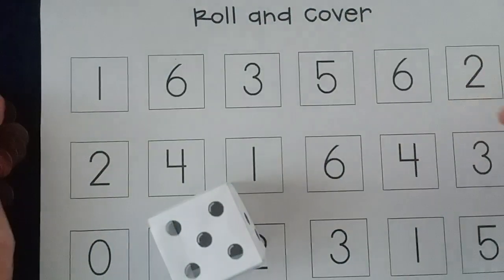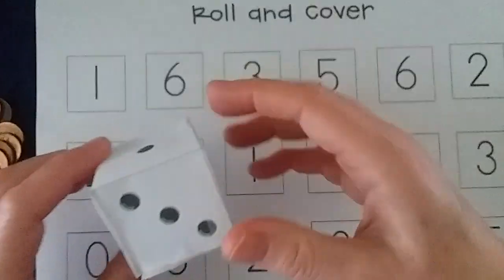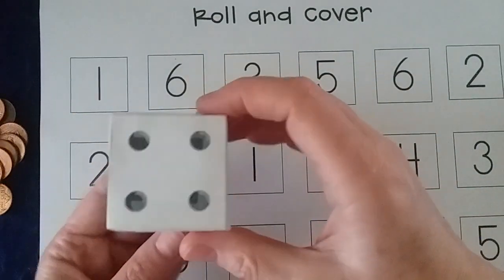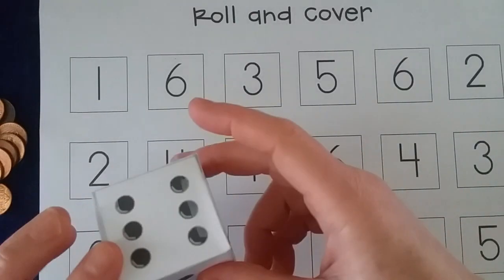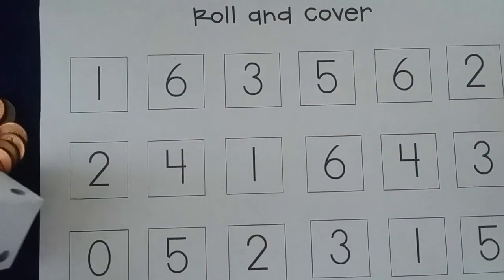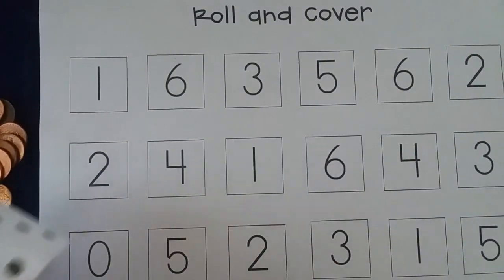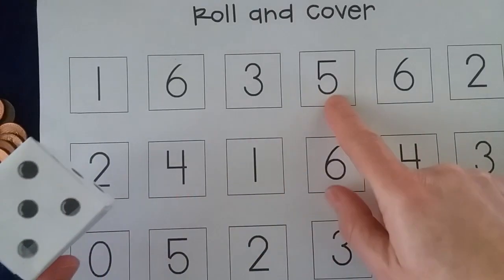So what this does is it helps students start to identify amounts by these positions. So they start to subitize and just know that these are six, four, one, three, five, and two without needing to count, and they also make associations between the amount on the die and the number.